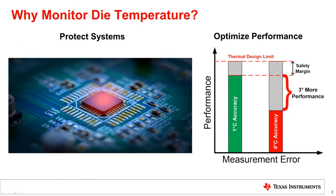Why is monitoring die temperature important? In high-performance processors such as CPUs, GPUs, ASICs, and FPGAs, accurate die temperature monitoring allows the system to do two main functions. First, it allows the system to operate safely without concerns of thermal damage. These high-performance processors can generate a lot of heat, especially when trying to maximize their capabilities. Closely monitoring the temperature allows the system to know if the device is overheating and allows the system to shut down and protect itself before irreversible thermal damage occurs.